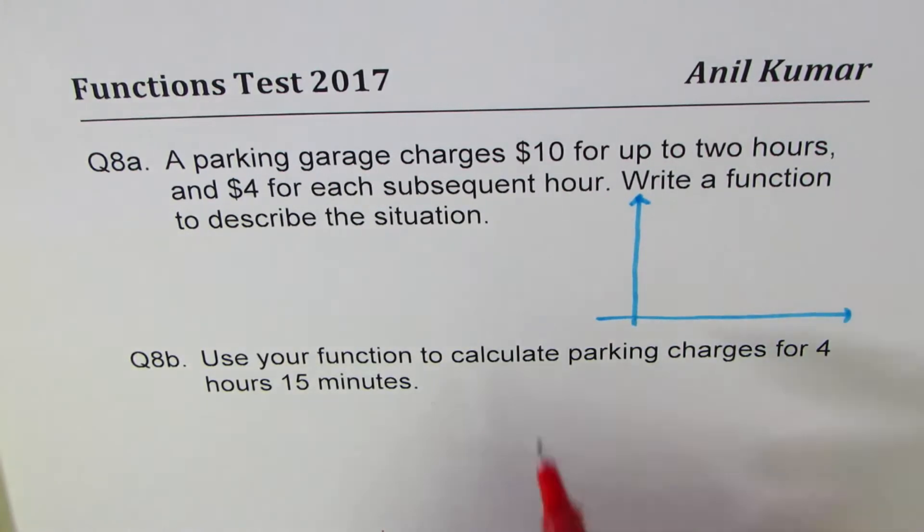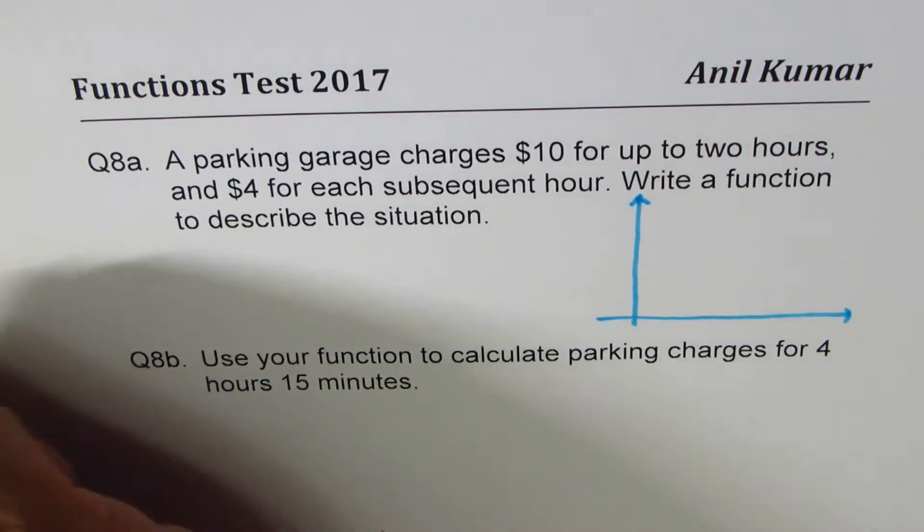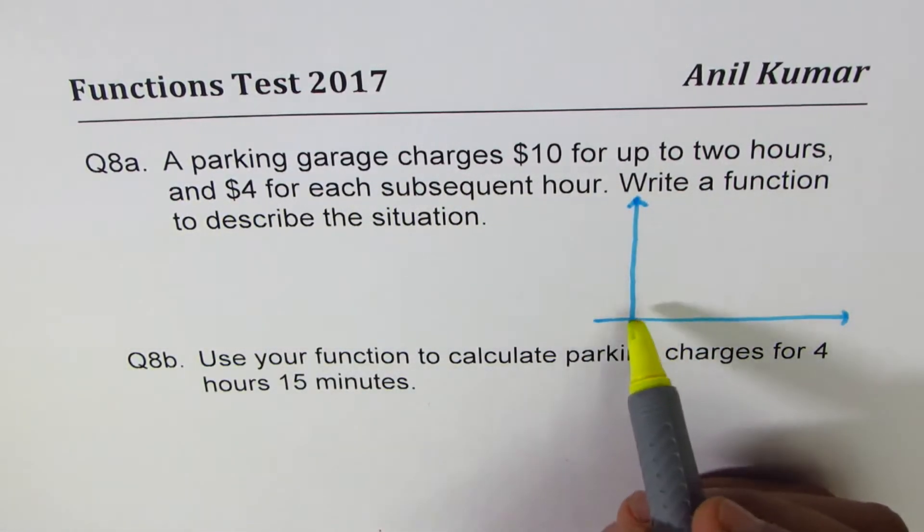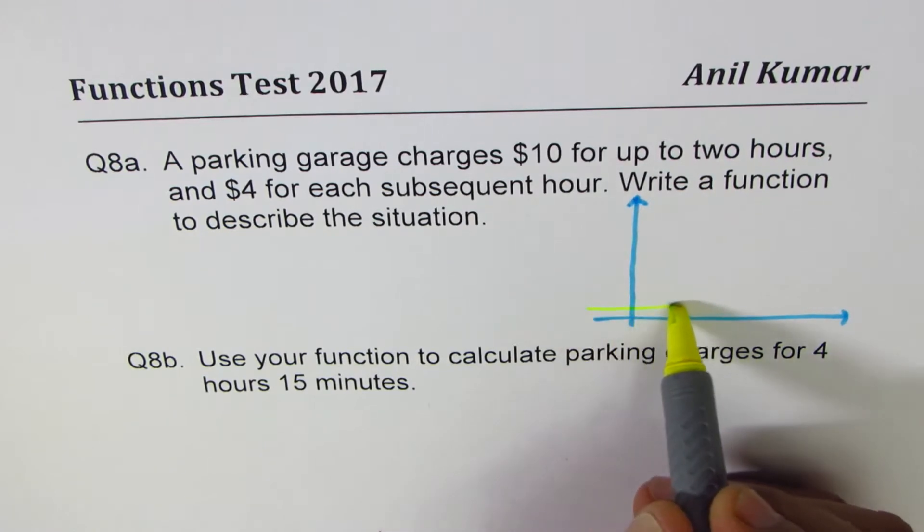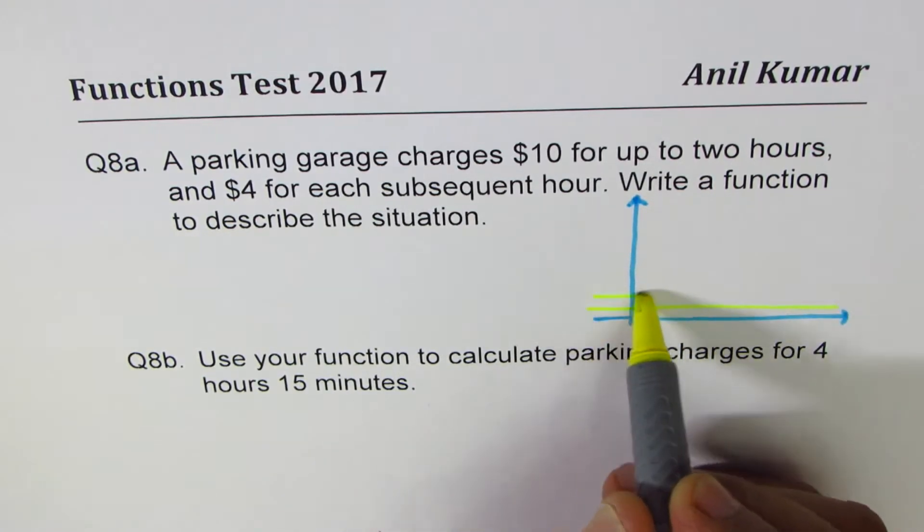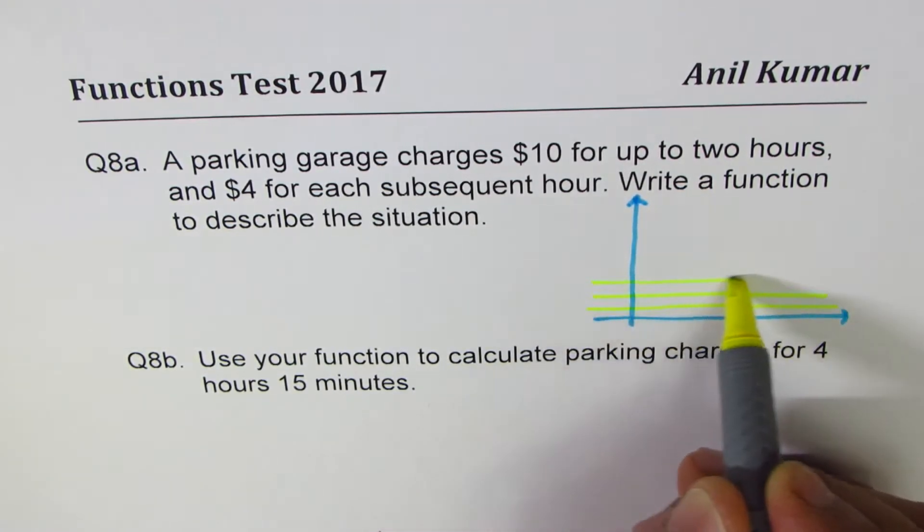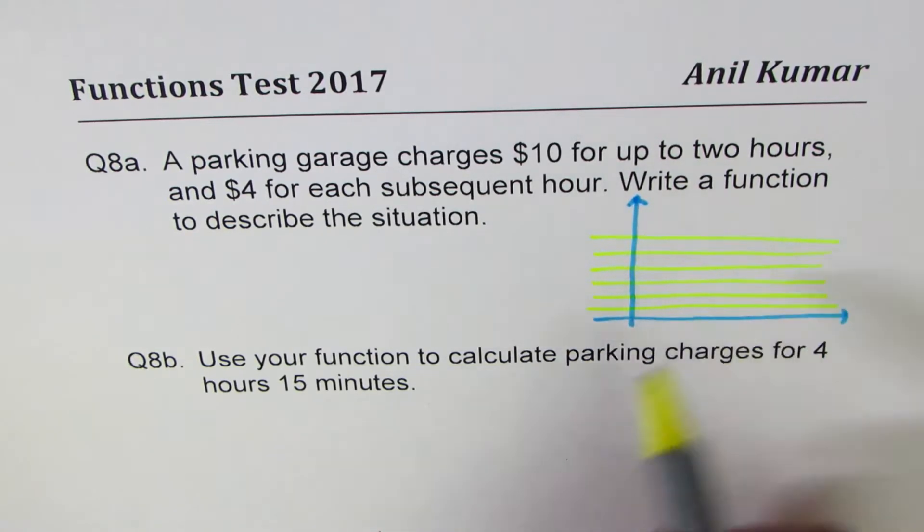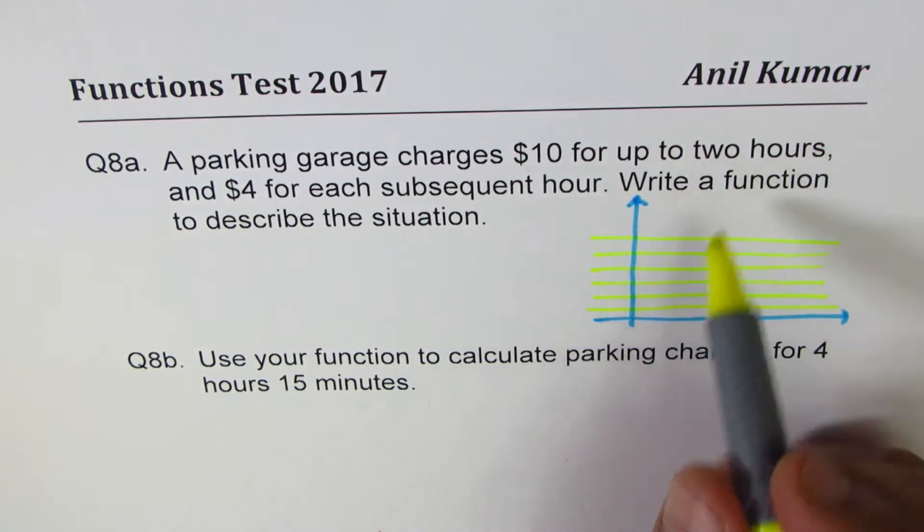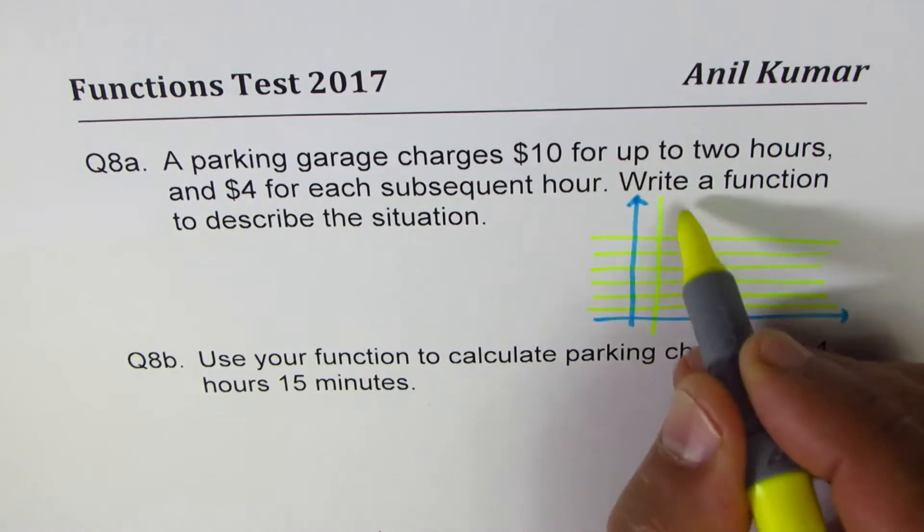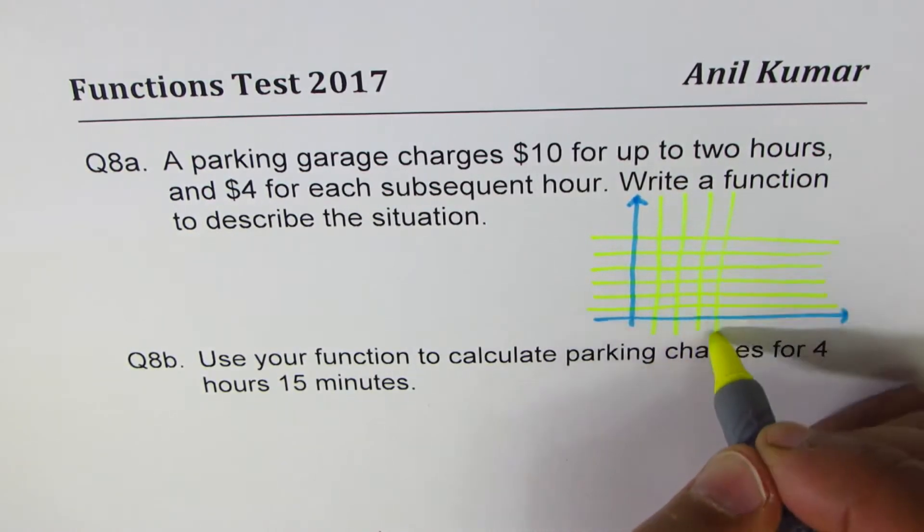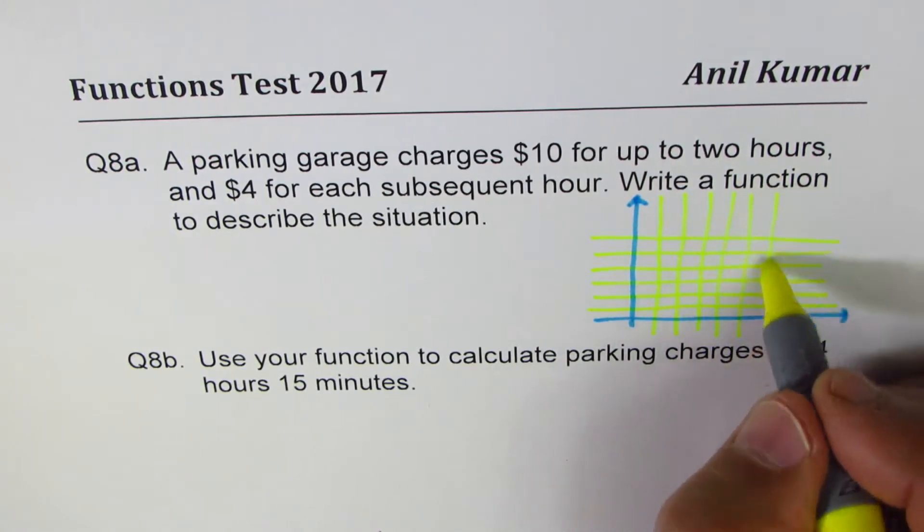So let us say that since it is saying $4 for each subsequent hour, we'll make these lines four units each: one, two, three, four. Four times two is eight. Both means 12, 16, 18, like that. And the hours, let's say these are the hours for us: one, two, three, four, five, six.